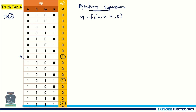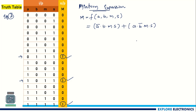So here for the first 1 output, I am writing it as: a is 0 so a-bar, b is 1, m is 1, and s is 1. So it is a-bar times b times m times s. This is the first term. Here again one more 1 is there at the output, so I need to consider that combination of inputs. It is plus a times b-bar times m times s, since those inputs are 1, 0, 1, 1. So I need to consider the third output of 1, where all inputs are 1, 1, 1, 1. So I write it as a times b times m times s. So this is the switching expression.